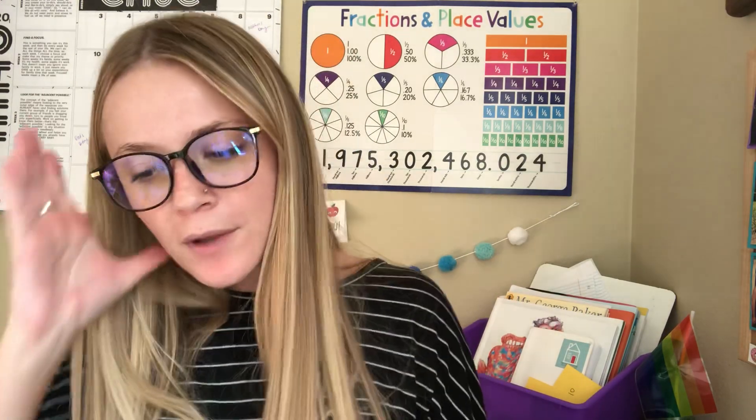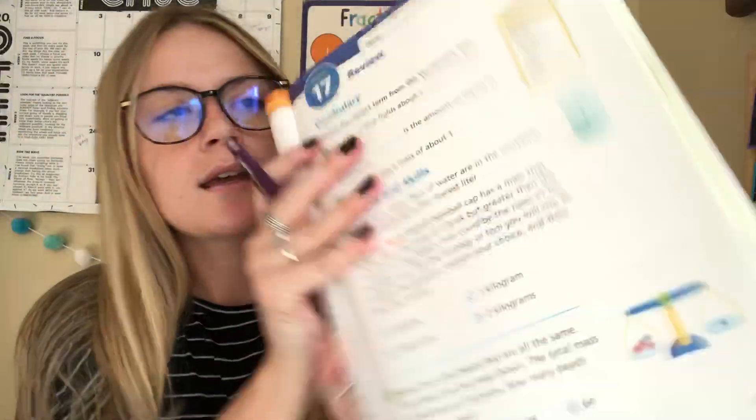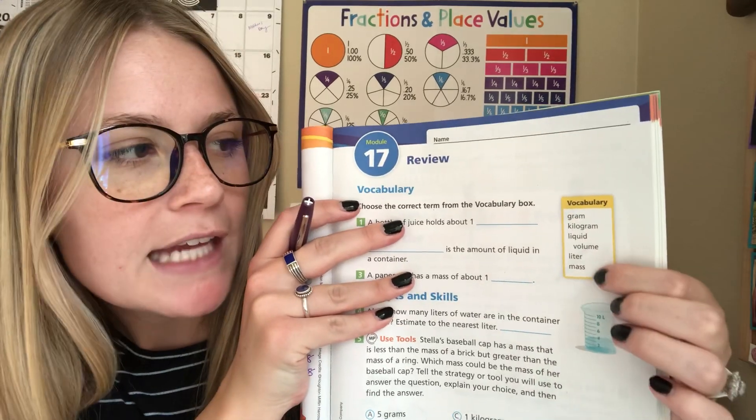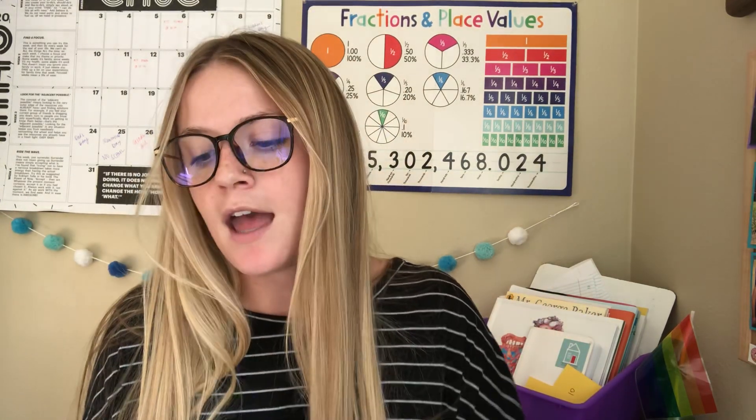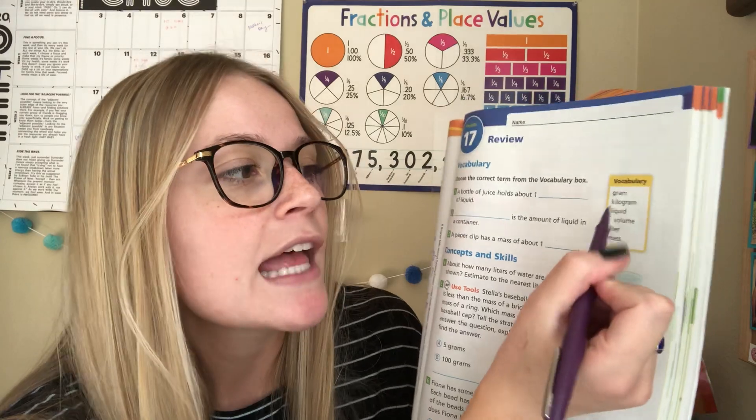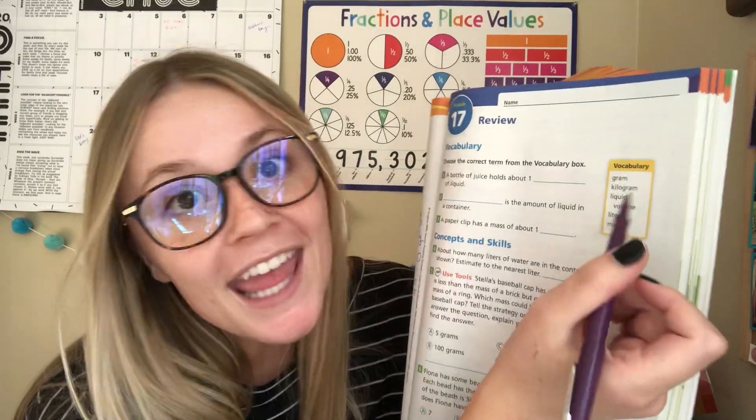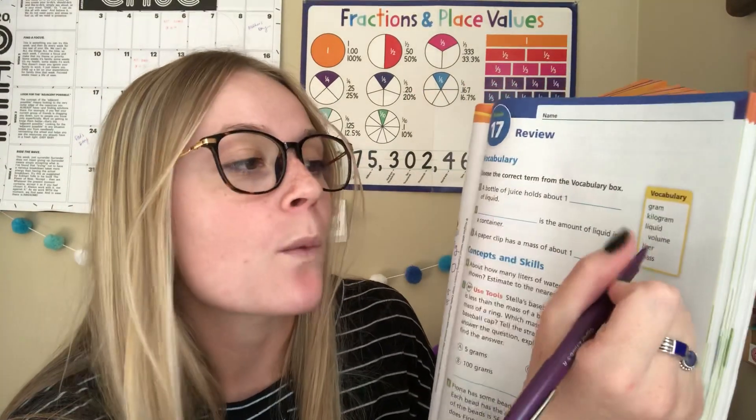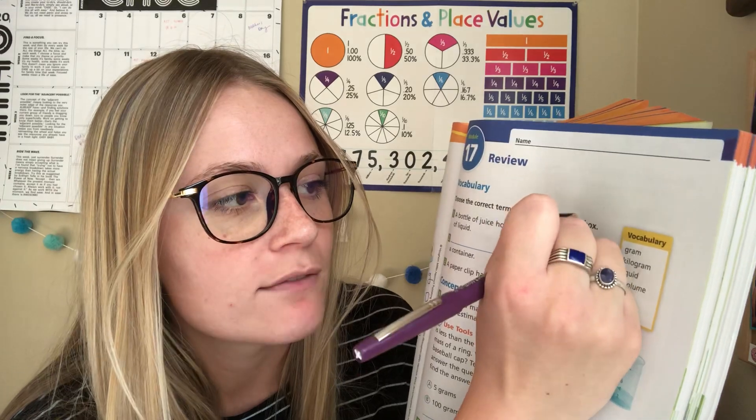So we're starting with our vocabulary in our vocabulary box. It says gram, kilogram, liquid volume, liter and mass. Number one says a bottle of juice holds about one blank of liquid. So think about what units do we use to measure liquid? Out of these options, gram, no that's not liquid. Kilograms, not liquid. Liquid volume, well that's what it is, not how we measure it. Liter and mass. So this one would be one liter. That is how we measure volume.